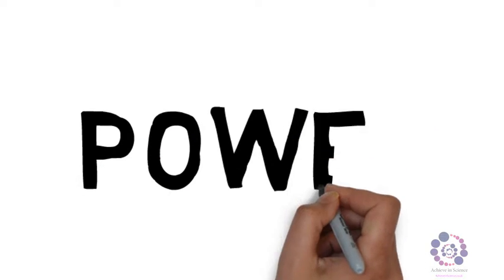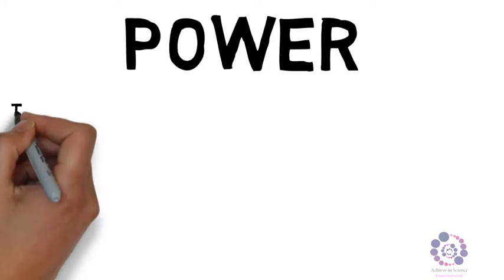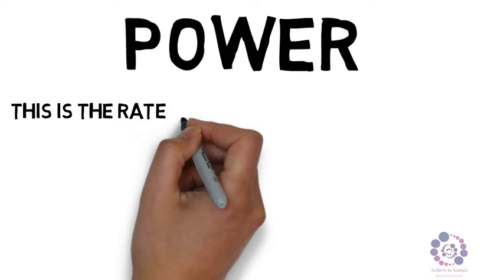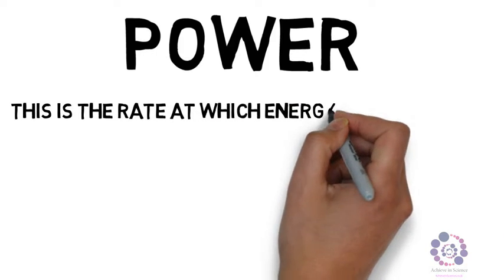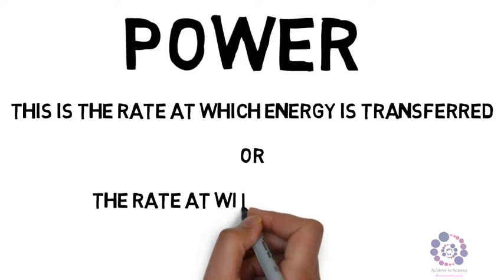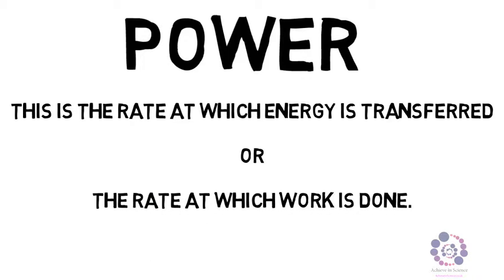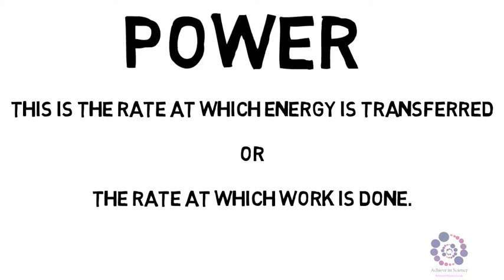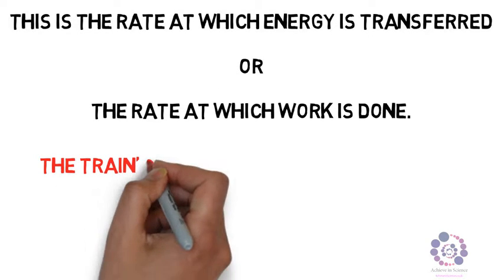Well, power is the rate at which energy is transferred or the rate at which work is done. We can use these then to solve our problem. In this case the train's engines are more powerful as their rate of energy transfer is greater.